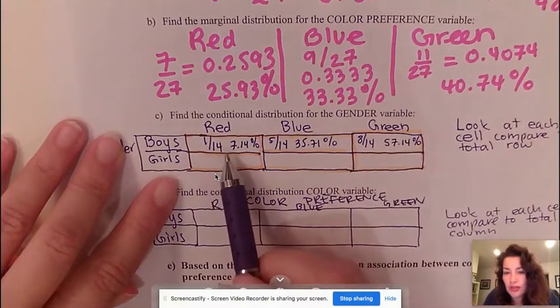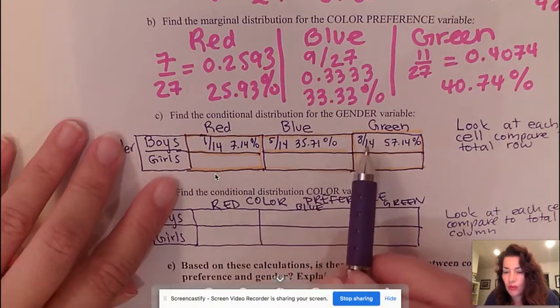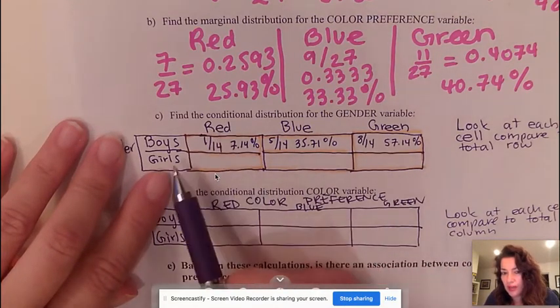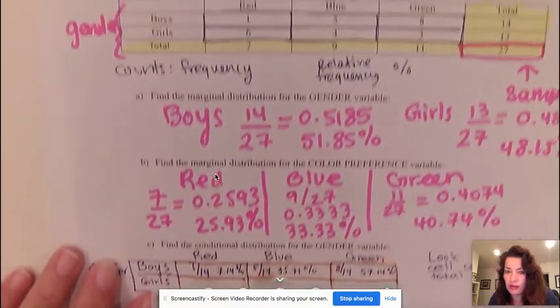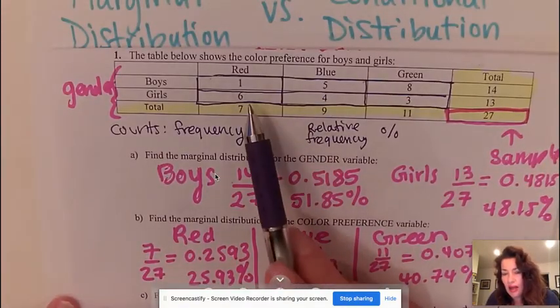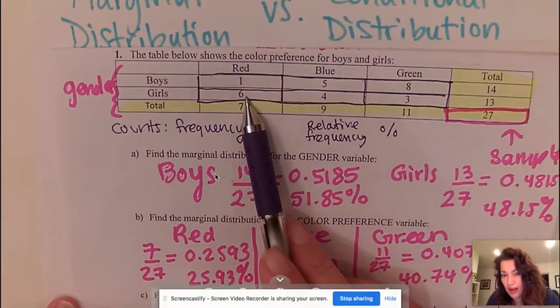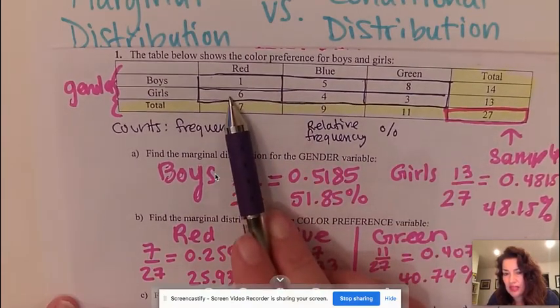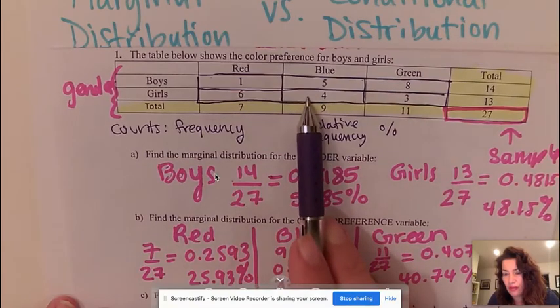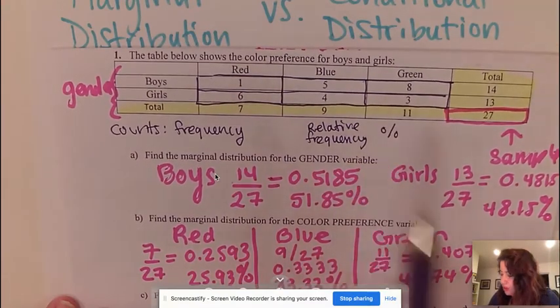So these are my conditional distribution for gender, but we are not done because now we're going to do the same thing for the girls. Looking at the girls, I'm going to look at each cell and divide each count in that cell by its total. So this one will have 6 out of 13, 4 out of 13, and 3 out of 13.